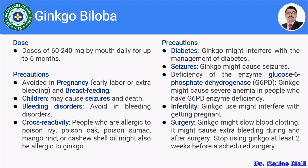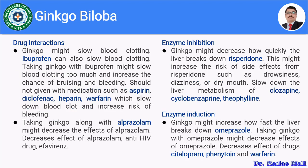Moving towards drug interactions of ginkgo biloba: the first interaction involves ibuprofen. Both ibuprofen and ginkgo have the ability to slow blood clotting. Combining ginkgo with ibuprofen may cause bruising and bleeding. Other drugs from the same category — aspirin, diclofenac, heparin, and warfarin — should also not be combined with ginkgo, as this might increase the risk of bleeding.